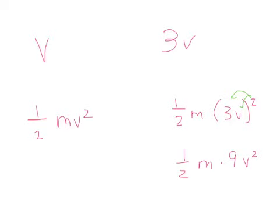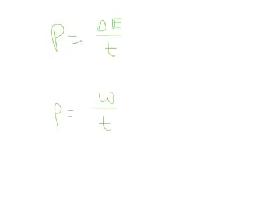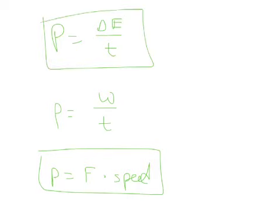Finally, let's talk quickly about power. Power equals change in energy over time. Power equals work over time. Power equals force times speed. These two are given on your formula sheet. The change in energy depends on the problem: if it's an elevator moving up and down it's a change in potential energy; if an object slides left to right with changing velocity it's a change in kinetic energy. Depending on the problem you need to figure out which equation to use.